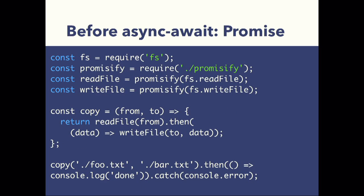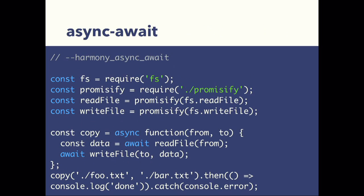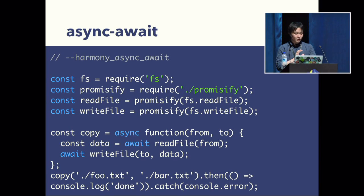We can use Promises on Node v4.0 — Promises can avoid callback hell easily. And finally, we can use async/await on Node v7.0, which is extremely useful to avoid callback hell. But currently this feature is experimental — you need to put the --harmony-async-await flag.